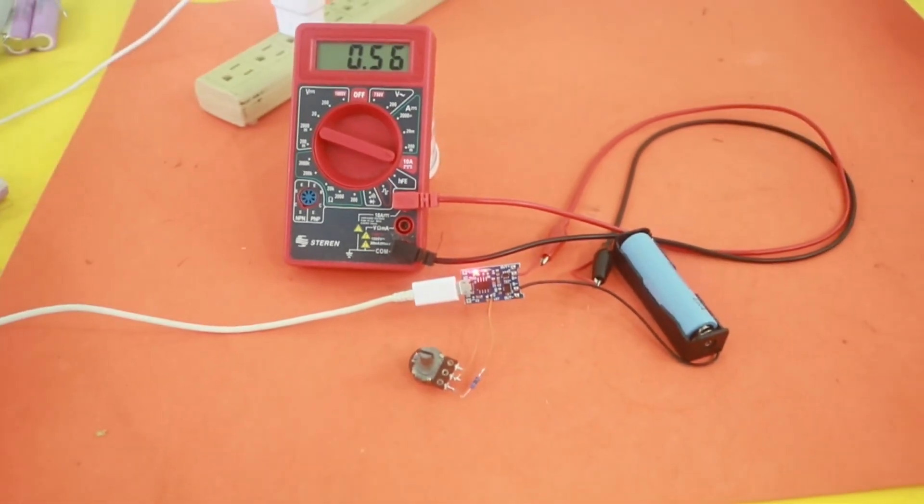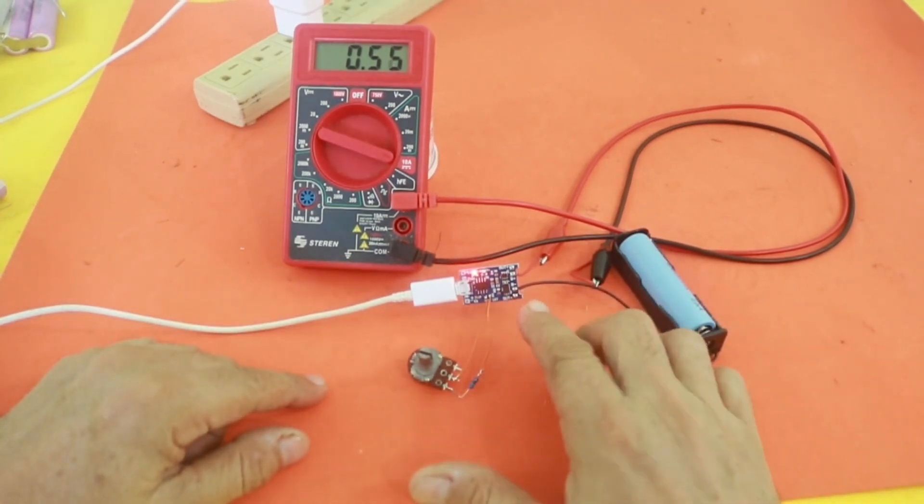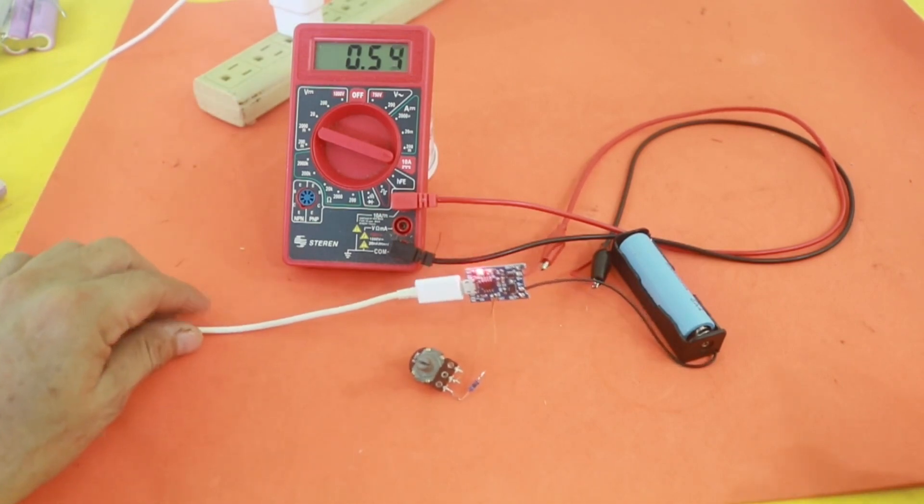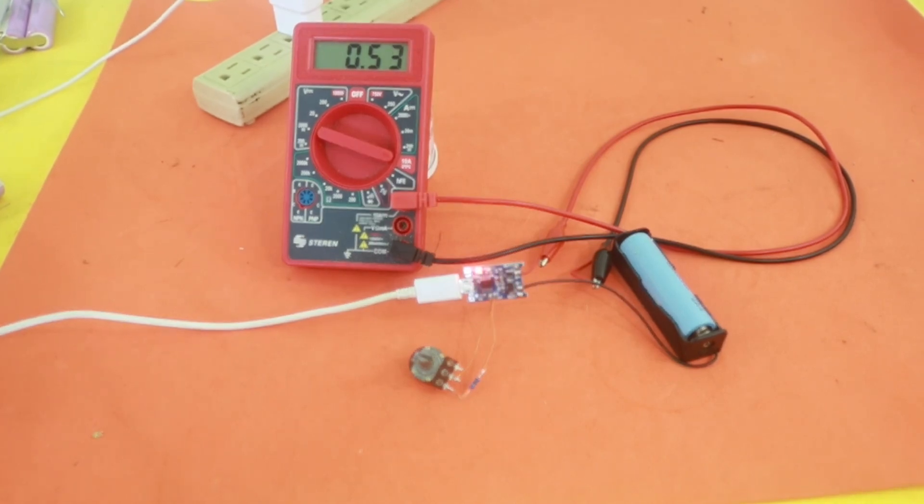So there you have it. A simple way to obtain variable current from these charge and protection circuits. Hope you liked the video. If that is the case please visit my Patreon page. Thanks for coming to my channel and see you in the next video.